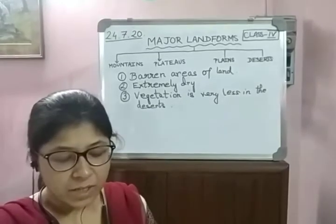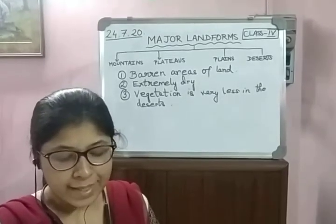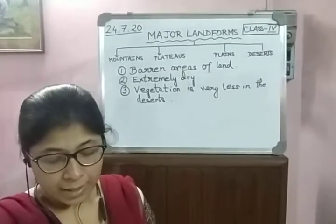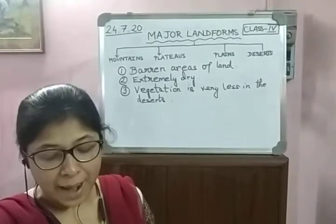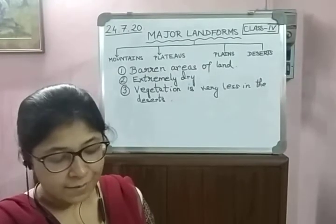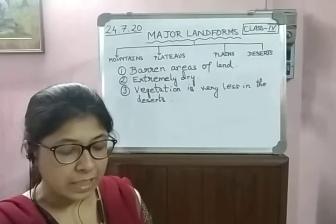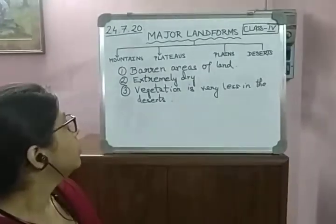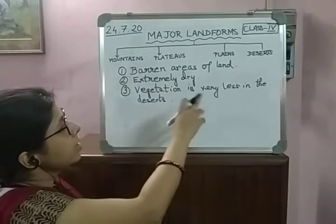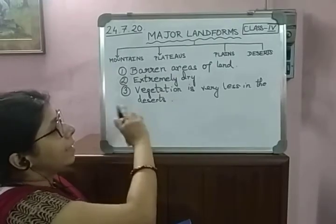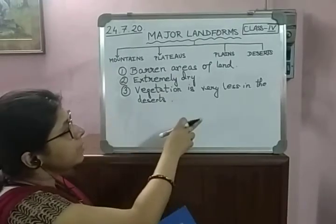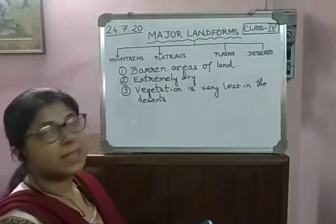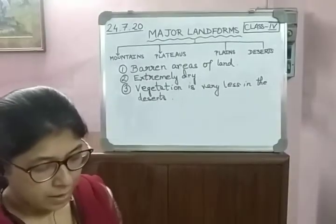Deserts are areas of land that are extremely dry. They are barren areas of land with little or no vegetation. So, barren areas of land, extremely dry, and vegetation is very less in the deserts.